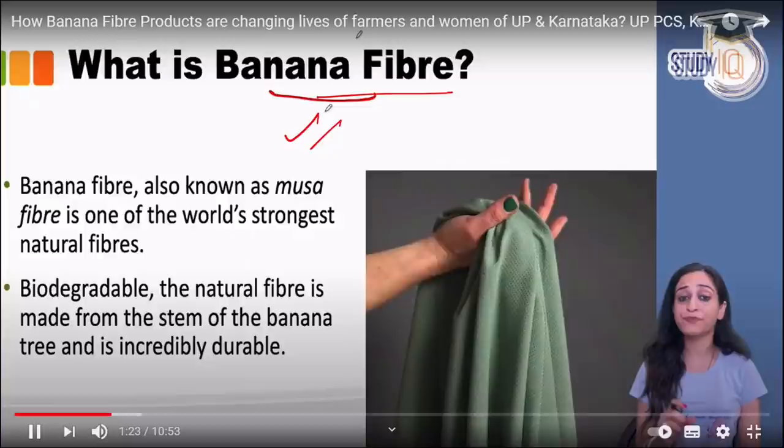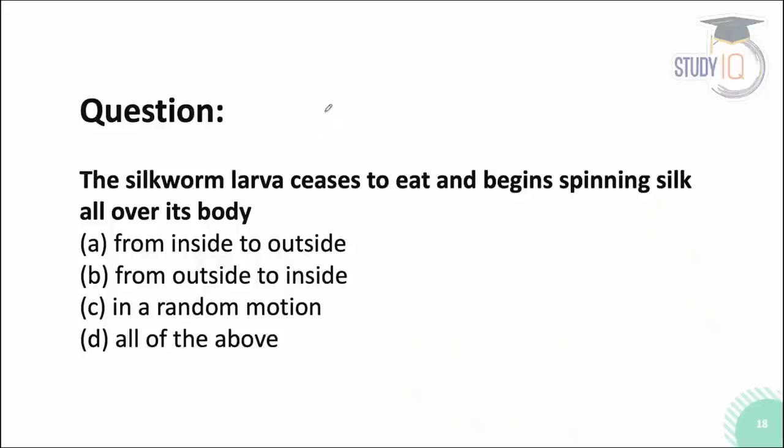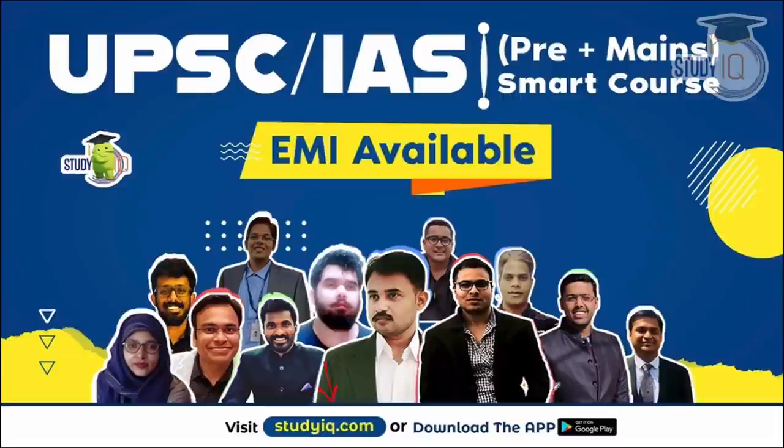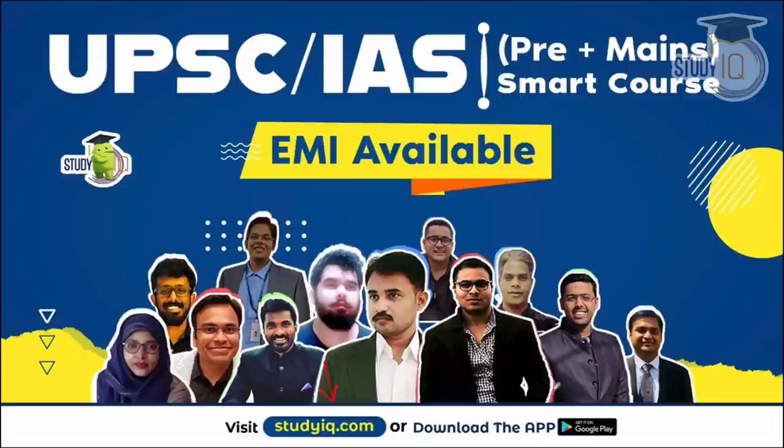We have also discussed banana fiber in a previous video — another example of natural materials being used in textiles. Quick question: when the silkworm larva ceases to eat and begins spinning silk, does it spin from inside to outside, outside to inside, or in a random motion? Leave your answer in the comments or participate in the Telegram poll. Use code 033 for 33% off any course.